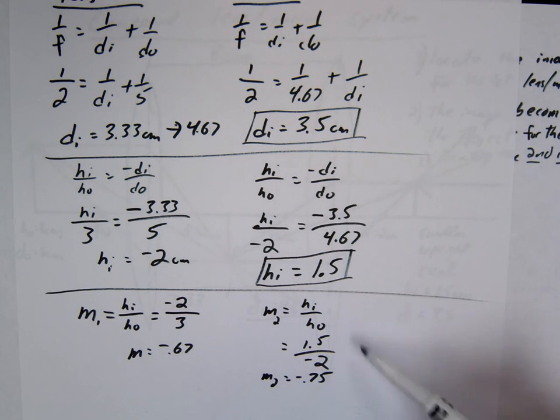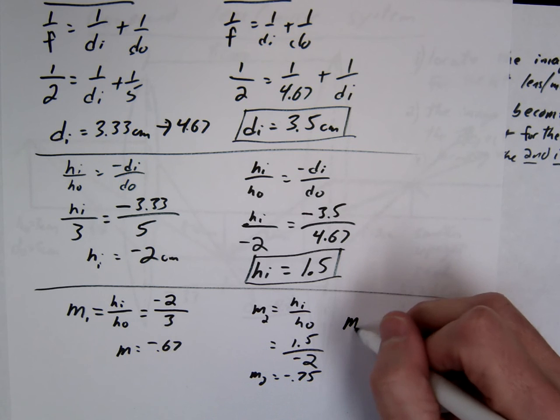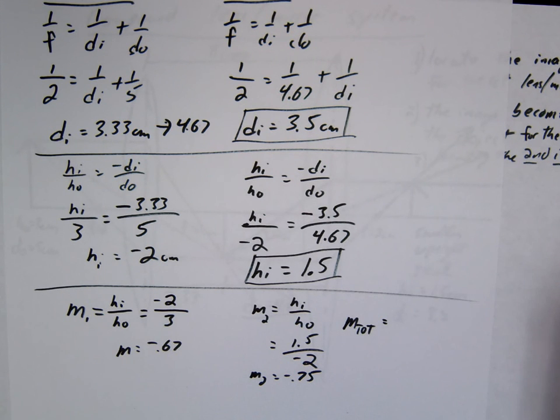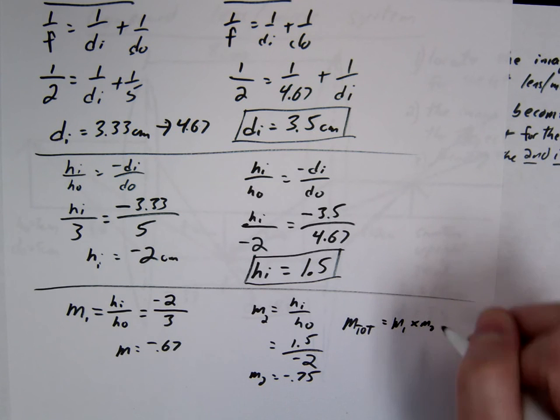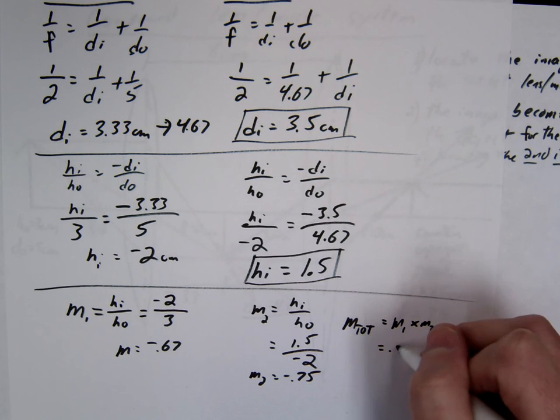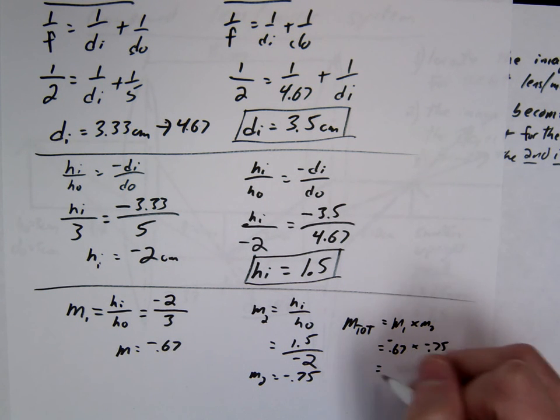So the first one is going to make it two-thirds the size. The second one is going to make it 75% the size of that, which means what's M total? Do we add them or multiply it? Good question. We multiply it, right? So this is 67 times smaller, 0.67 times smaller. This is 0.75 times smaller. So you multiply it. So M total is always the multiplication or the product of the two. So that's 67 negative times negative 75 gives us a half, correct? Positive 0.5.